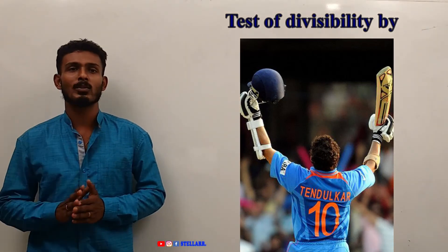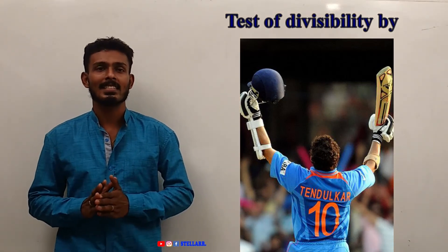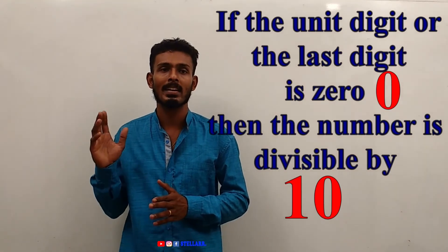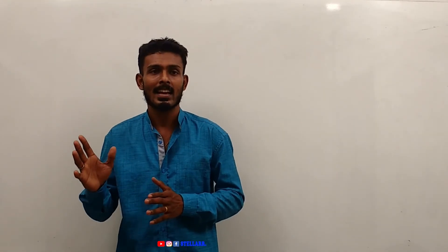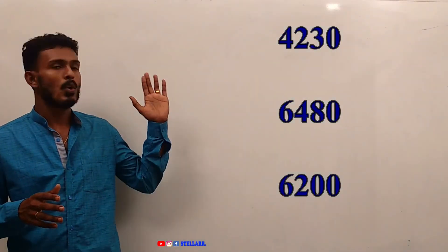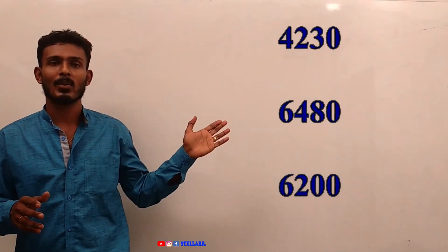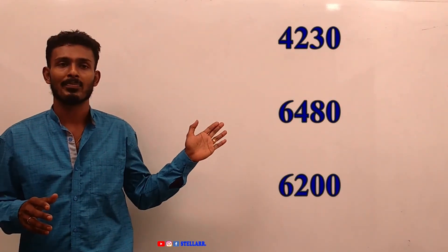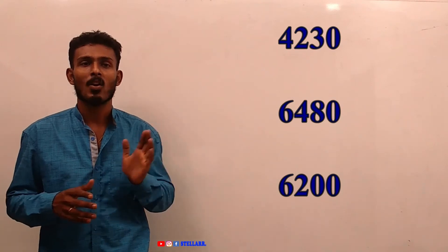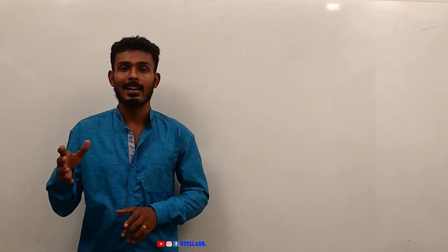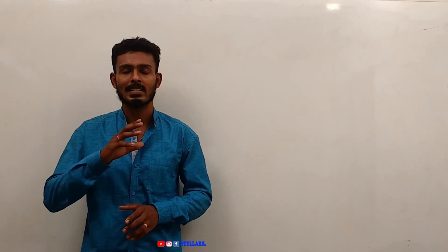Test of Divisibility by 10. This is an easy one to check. If the unit digit or the last digit is 0, the number is divisible by 10. Let us take examples: 4230, 6480, 6200. Here, all the unit digits are 0, so these numbers are divisible by 10.